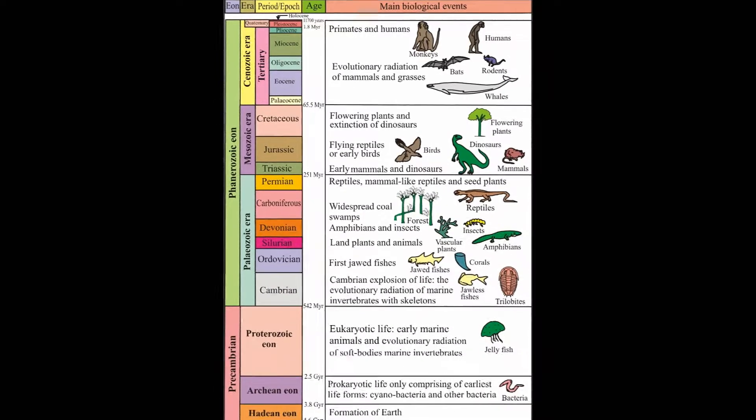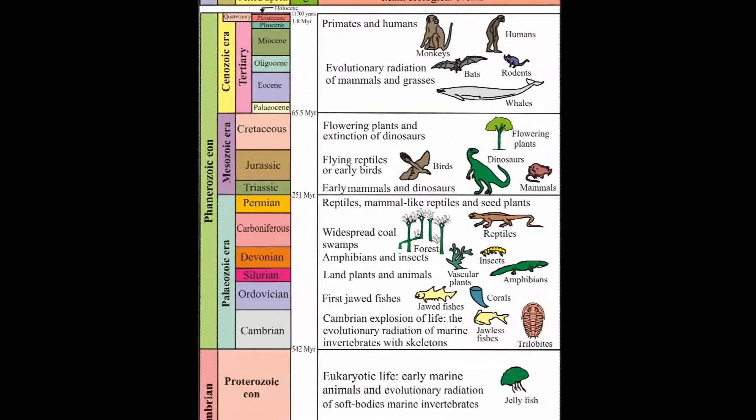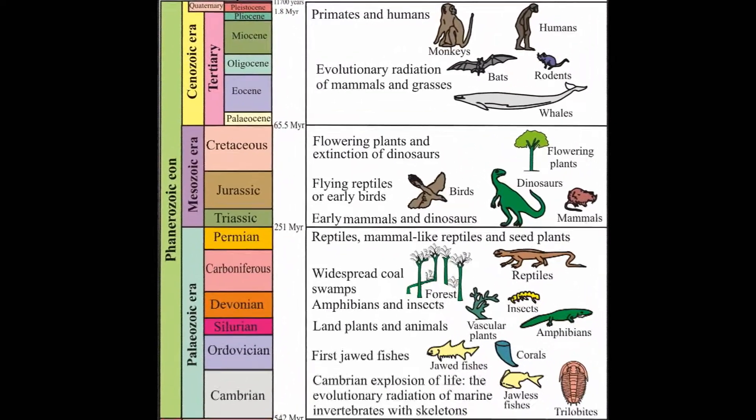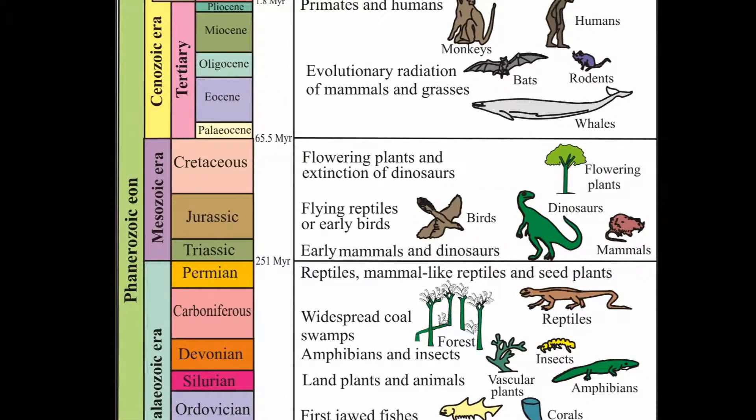Today I will talk about Deccan volcanism, which is one of the most significant events in the geological history of the world. There are two important issues related to Deccan volcanism. Number one, it is one of the most significant volcanism across the world and it is at the Cretaceous-Tertiary boundary — the boundary between the end of the Mesozoic era and the beginning of the Cenozoic era.